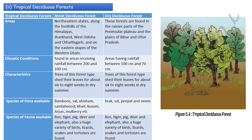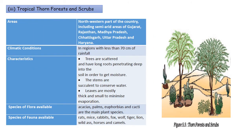Species of flora: moist deciduous forests have bamboo, sal, shisham, sandalwood, hair, kusum, arjun, and mulberry. Dry deciduous forests have teak, sal, peepal, and neem. Species of fauna: moist deciduous forests are home to lion, tiger, pig, deer, elephant, and also a variety of birds, lizards, snakes, and tortoises. Dry deciduous forests similarly host lion, tiger, deer, pig, and a variety of birds, lizards, and snakes.